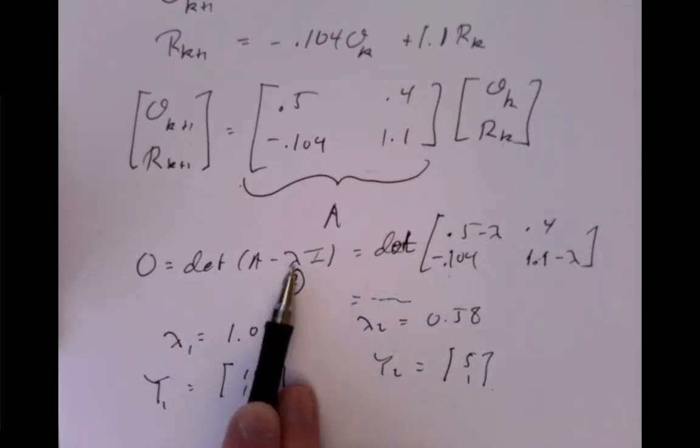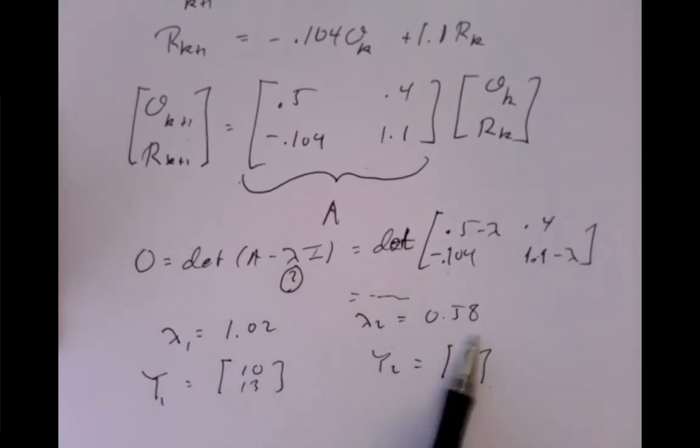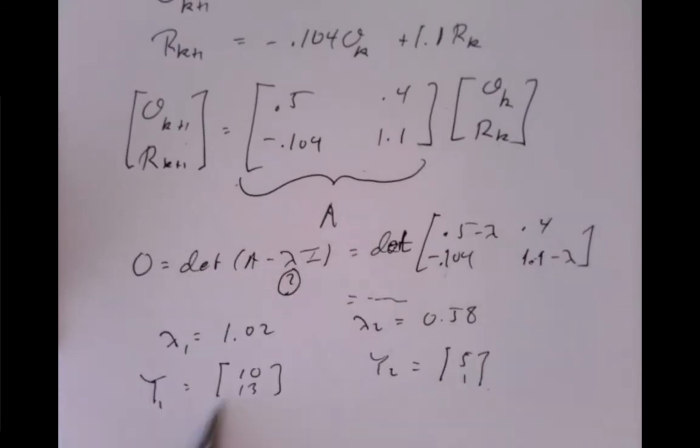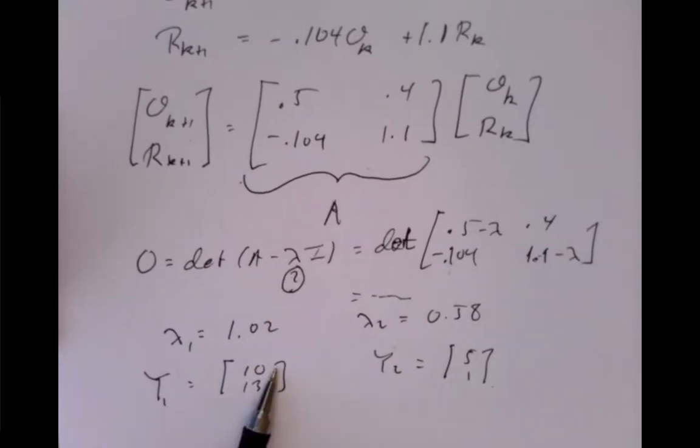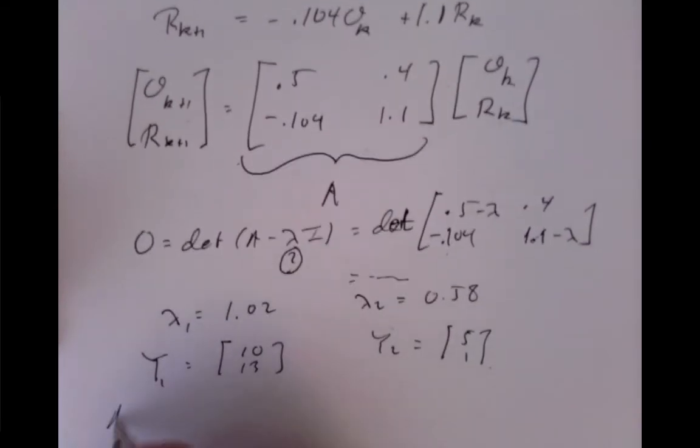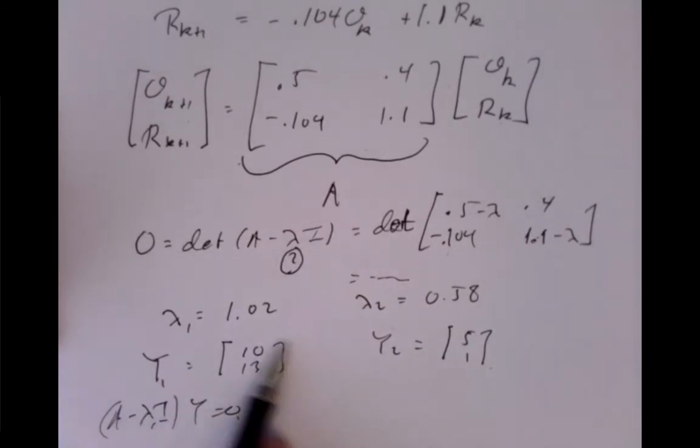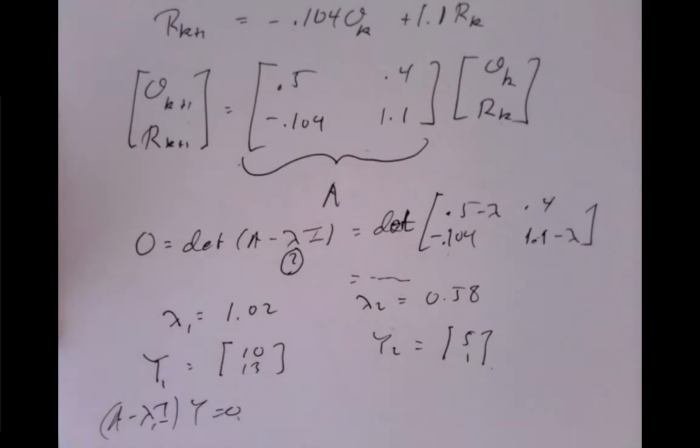you'd plug them back in into A minus lambda identity. So I'd take A minus 1.02 identity, and I'd take A minus 0.58 identity. I'd calculate out there a basis for the solutions of that linear equation, the linear equation being A minus lambda_1 identity, y equals 0. Then you'd find that y_1 is a solution, and that every solution is just a multiple of that y_1, that it spans the solutions.